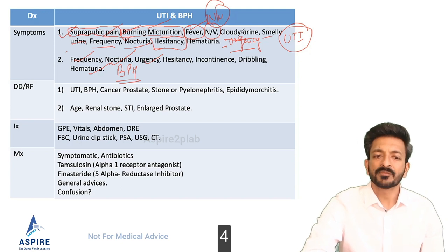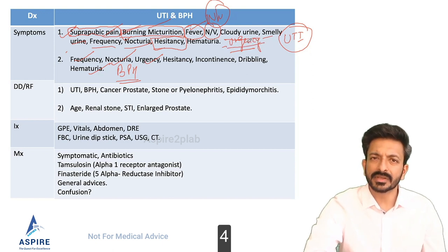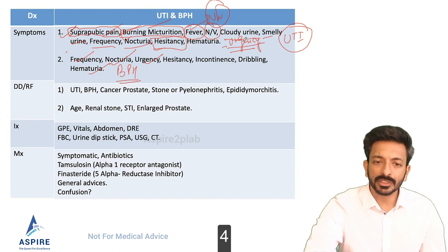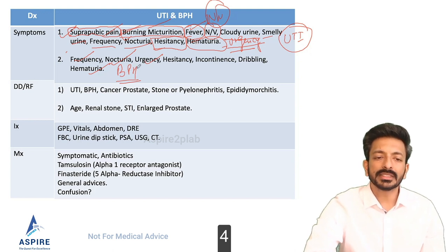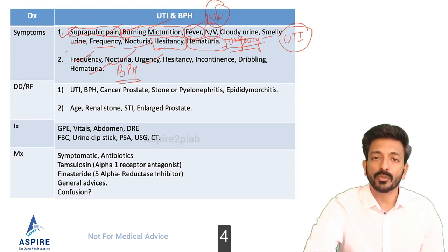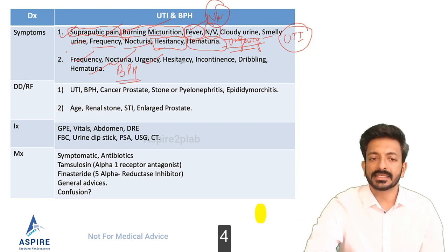For UTI: suprapubic pain, burning micturition, fever, nausea, vomiting, cloudy and smelly urine, frequency, nocturia — and rather than hesitancy, more towards urgency, meaning it is urgent to pass urine, you have to rush to the toilet. Hematuria means blood in the urine or a change in urine colour. For BPH: frequency, nocturia, urgency, and hesitancy.